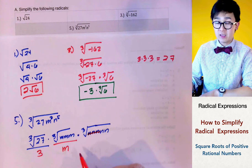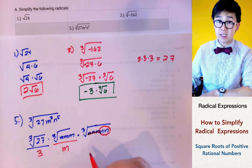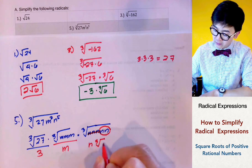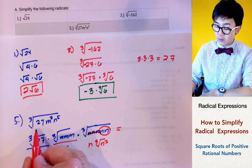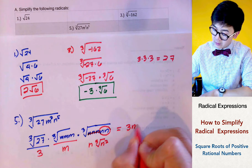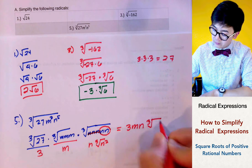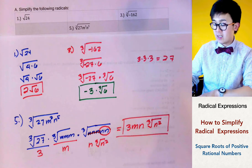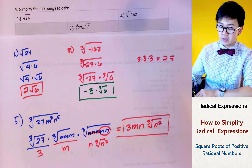For n to the 5th, we can take out three n's as a perfect cube, leaving n squared inside the cube root. This gives us n times the cube root of n squared. So the simplest form of the cube root of 27m cubed times n to the 5th is 3mn times the cube root of n squared.